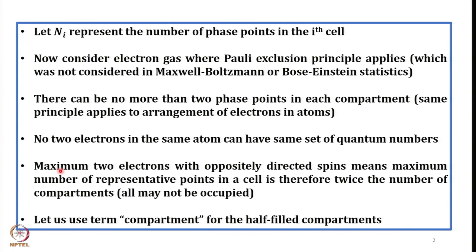That means maximum two electrons with oppositely directed spins, so the maximum number of representative points in a cell is therefore twice the number of compartments. You can have a compartment in which you put a maximum of two phase points. So if you know the total number of compartments, then the number of representative points in the cell is twice the number of compartments, because each compartment can accommodate two.